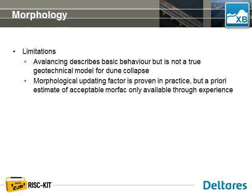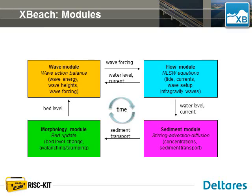A limitation of the avalanching model is that it's relatively parameterized and simple — it's definitely not a full geotechnical model for dune collapse. Another limitation of using the morphodynamic model with the morphological acceleration factor is that it's very difficult to tell in advance how far you can push the morphological acceleration before the results begin to diverge significantly from an unaccelerated model. With that, we've finished a brief overview of the four main modules in XBeach — the wave module, flow module, sediment transport module, and morphology module — and their interactions.